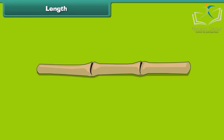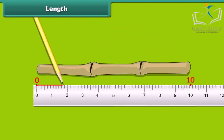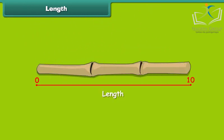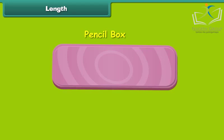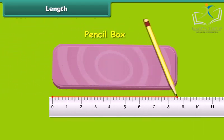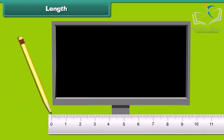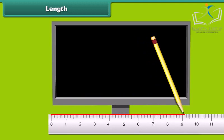Friends, look at this picture. This is a bamboo. There are two ends of a bamboo. To measure the length of bamboo, we measure it from one end to another. Look at this pencil box. The length of pencil box is from its one end to another. Look at this computer screen. Can you find out the length of computer screen? Yes, the length of computer screen is from one end to another.